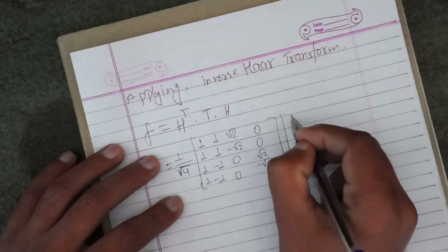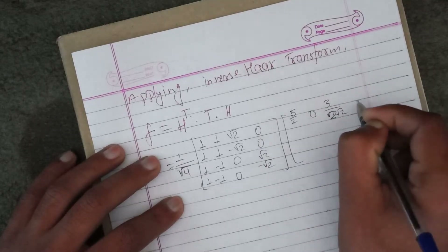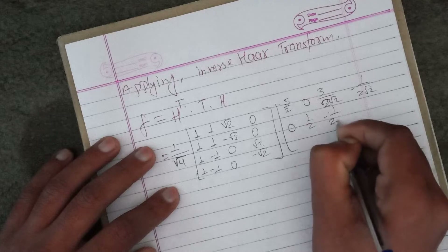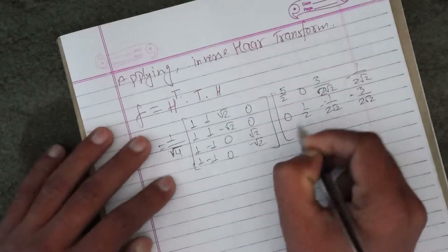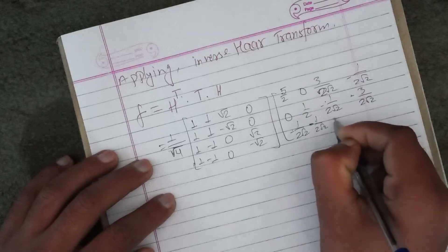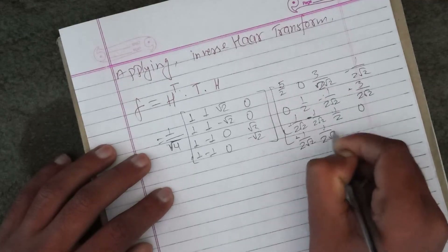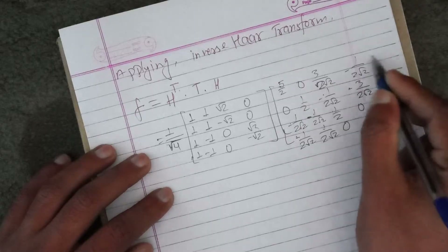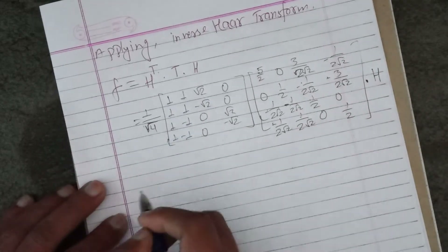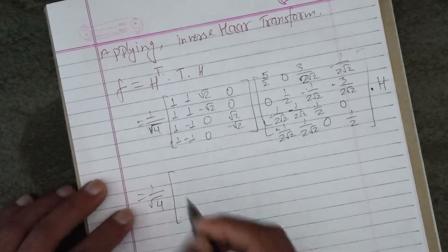Now we have the T value. How do we get the output? 2.5 by 2, entries: 1, 2, root 2, minus 1 by 2 root 2, then 0, 1 by 2, minus 1 by 2 root 2, minus 3 by 2 root 2, then minus 1 by 2 root 2, minus 1 by 2 root 2, 1 by 2, 0, minus 1 by 2 root 2, 1 by 2 root 2, 0, 1 by 2. We get a 4 cross 4 matrix multiplication. In the next step, 1 by root 4 — now we multiply this.